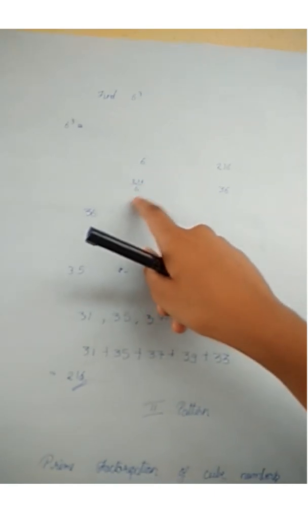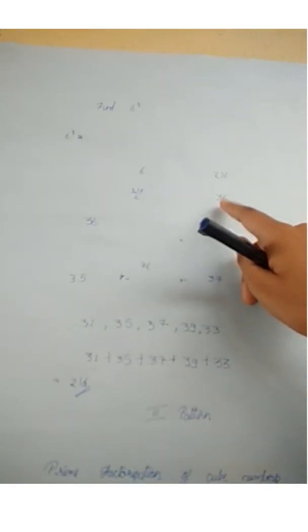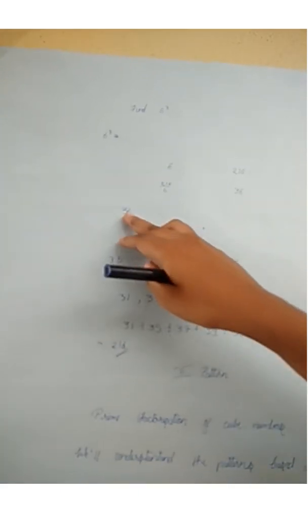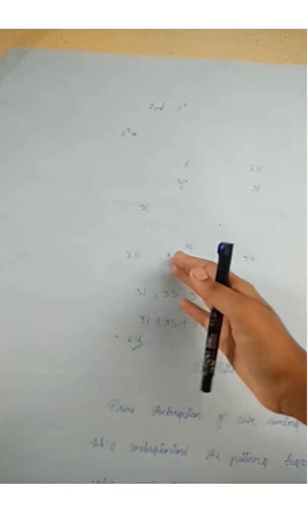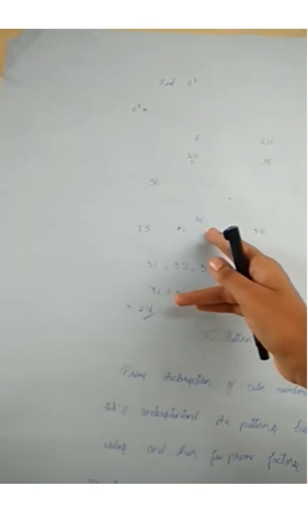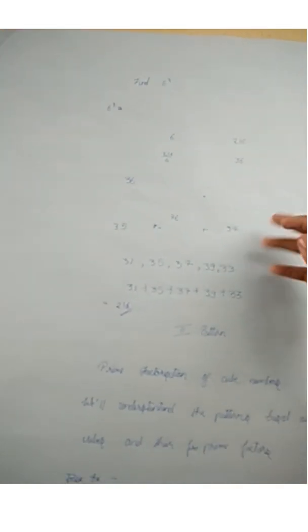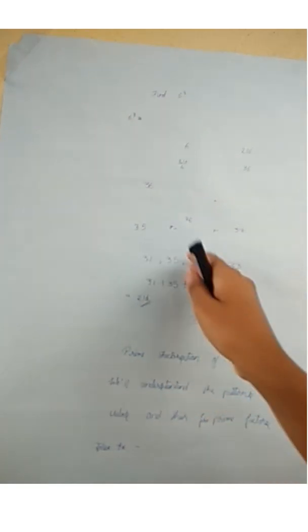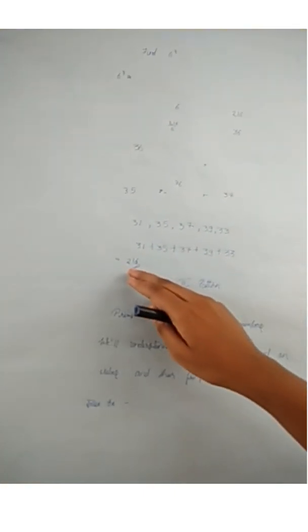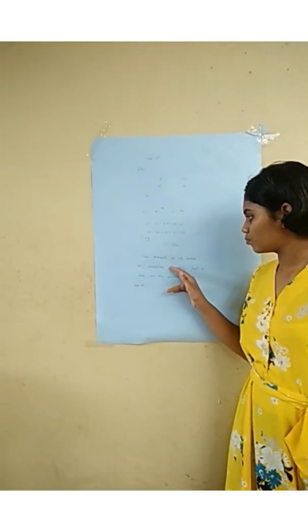Now the second example: 6 cube equals 216. Divide 216 by 6 to get 36. Since 36 is even, we take one odd number on each side: 35 and 37. We still need two more numbers, so we extend to 33 and 39. Adding 31, 33, 35, 37, 39 — wait, adding 33, 35, 37, 39 and 31 gives 216. So your doubt about bigger numbers should now be clear.